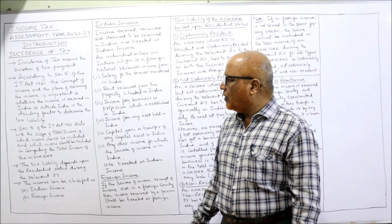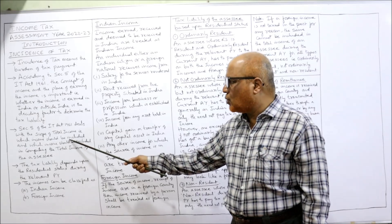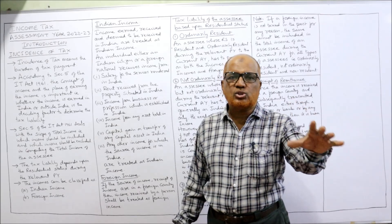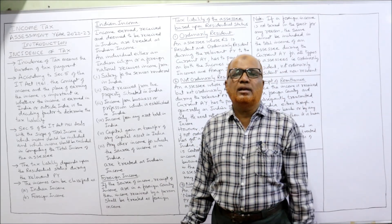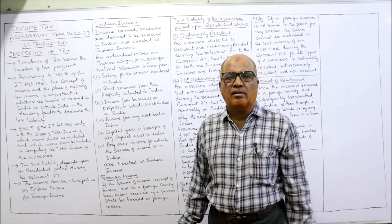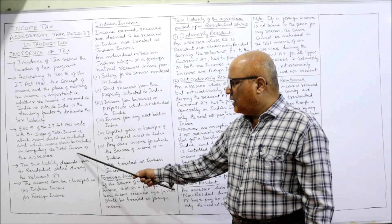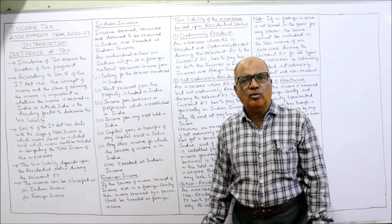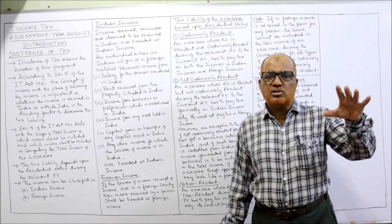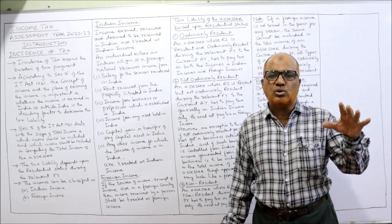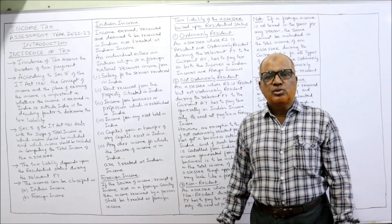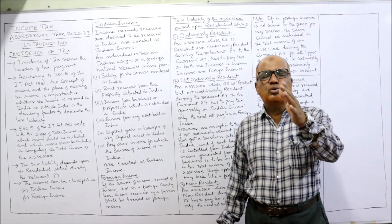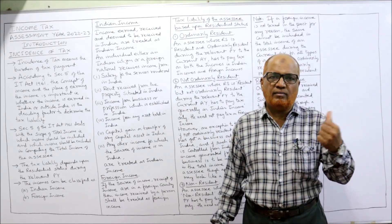Section 5 of the Income Tax Act 1961 deals with the scope of total income — that is, which income is to be included and which is to be excluded in computing the total income during the previous year relevant to the current assessment year. The tax liability always depends on the residential status of the person. So many provisions are there for how to determine the residential status of an individual, HUF, company, firm, etc.